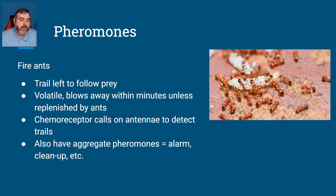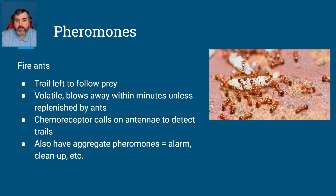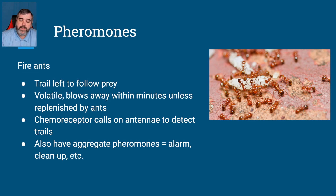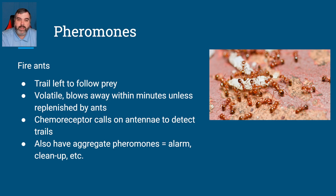Here we have fire ants — they leave a trail pheromone for food. It's very volatile and can blow away within a few minutes. The ants replenish it as long as the food source is there, and use chemoreceptors on their antennae to follow the trail. They also have other pheromones like alarm and cleanup. What type of pheromone is that? It's not reproduction-related — it's relaying information. It's a signaling pheromone.